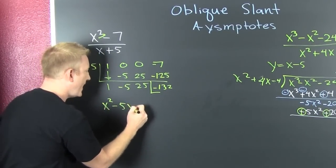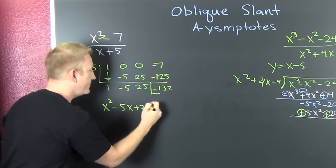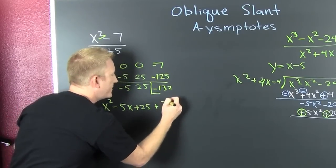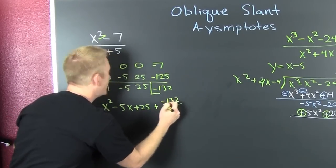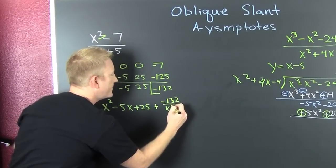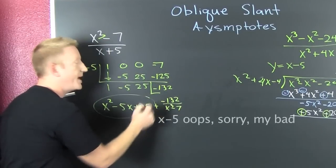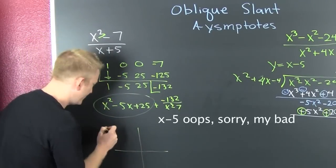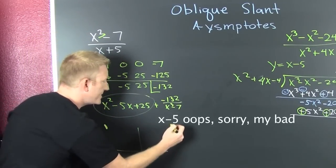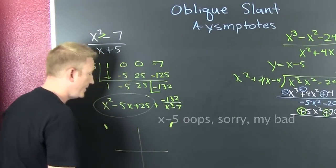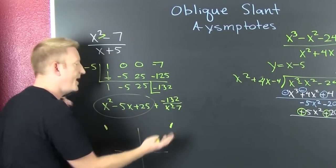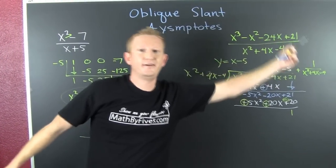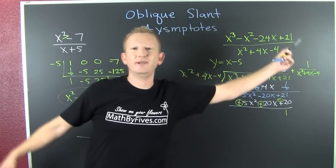minus 5, oops sorry my bad, x - 5. So this is going to be my oblique asymptote, and it's going to be some parabolic. I didn't graph this ahead of time, but a parabola ends there and starts there, vice versa, starts, ends, and that's going to be the end behavior of your polynomial. Oblique asymptotes.